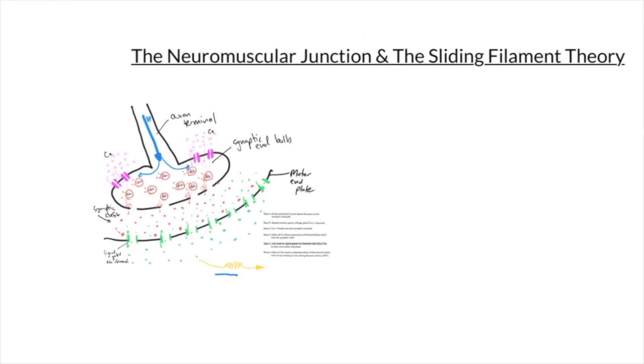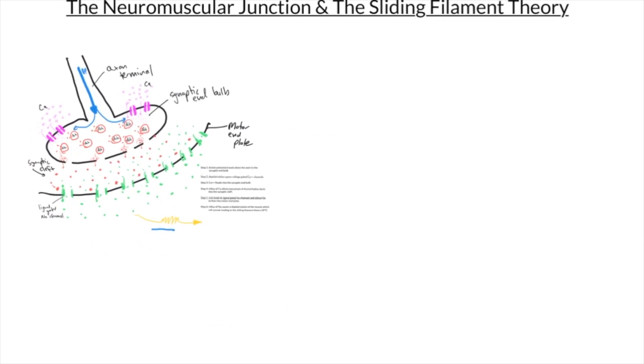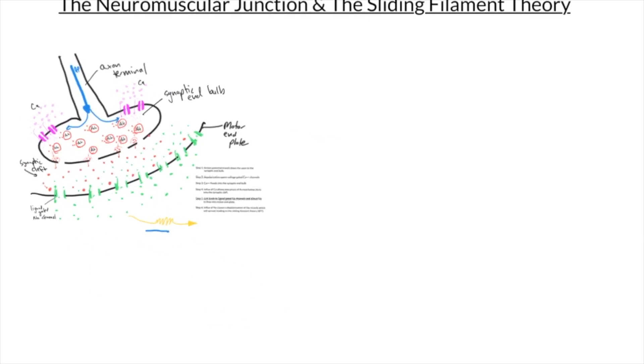We're going to zoom back out to get a bigger picture of our whiteboard, then zoom in on the right and start drawing and identifying all the components of our sliding filament theory. We'll start with the contraction cycle by drawing our thick and thin filaments — myosin and actin. Remember, actin is guarded by two regulatory proteins: tropomyosin and troponin.